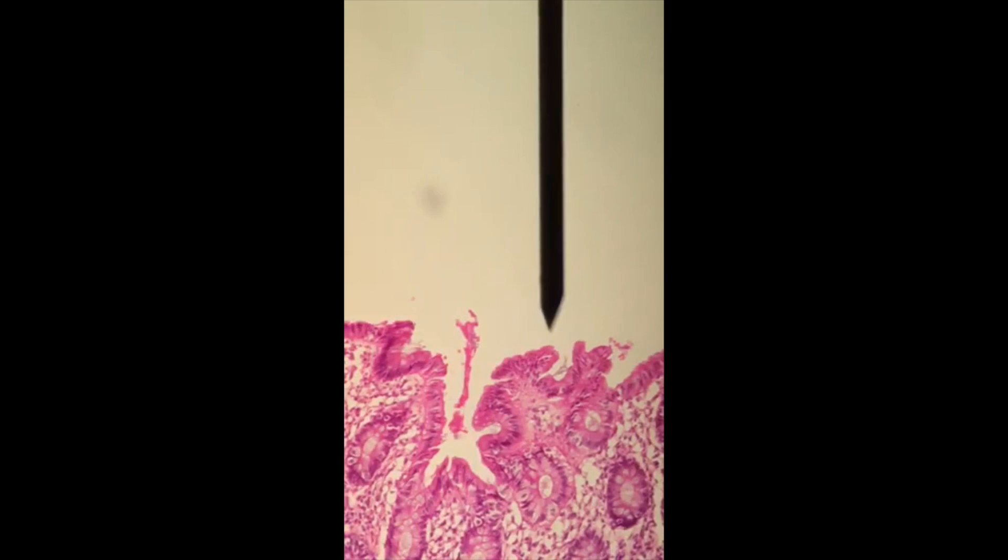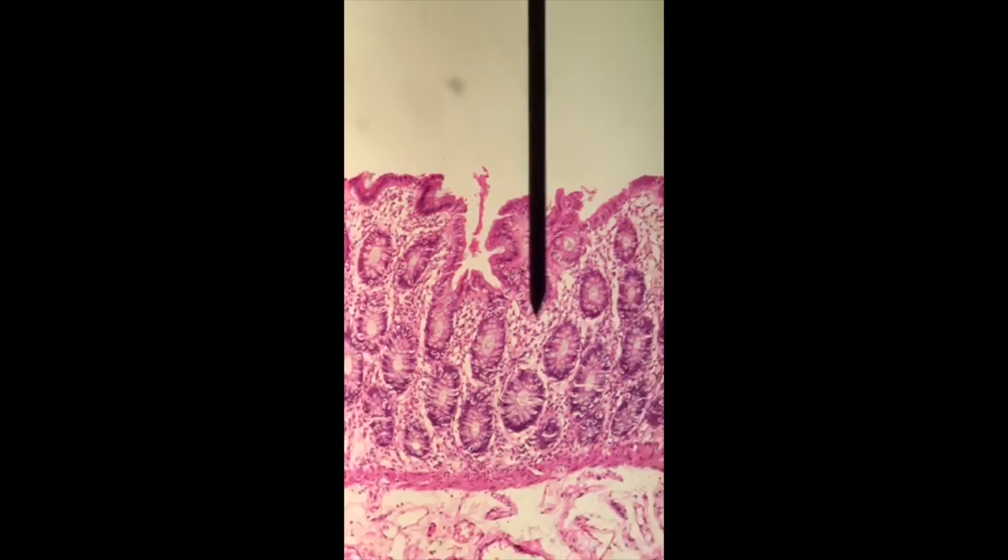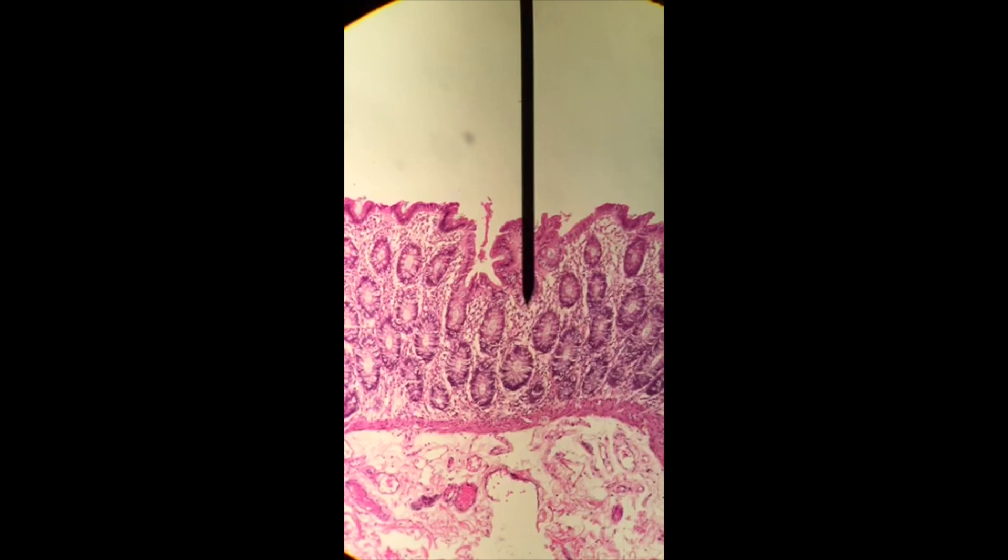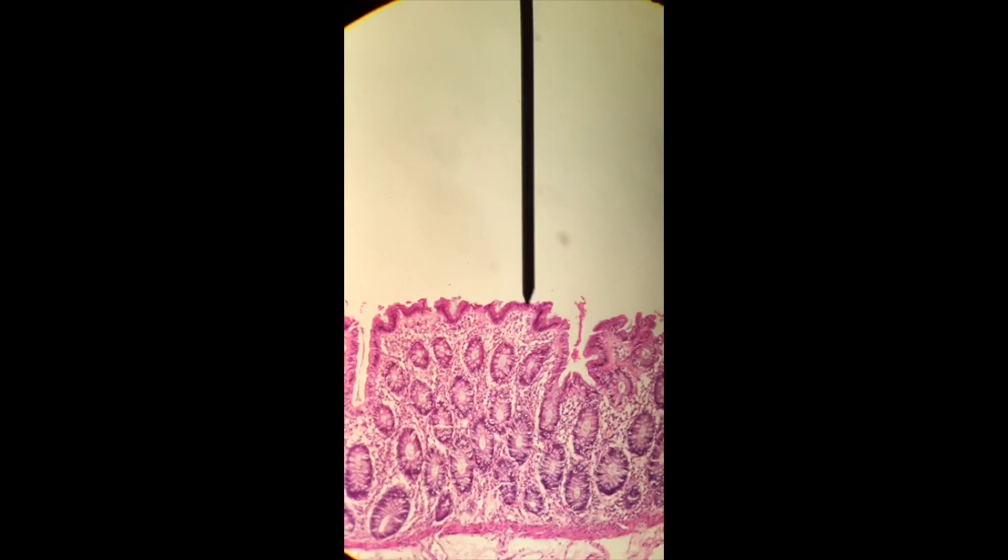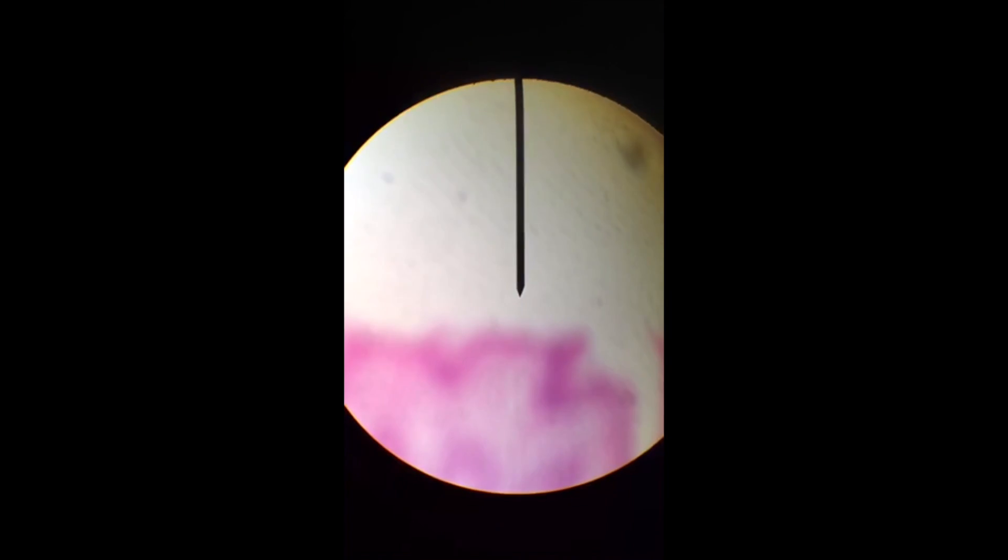Again, notice that our cells are going to be simple columnar. Notice that we are lacking villi and microvilli like we see in the small intestine. We no longer have those structures.